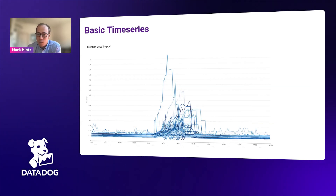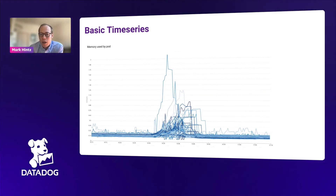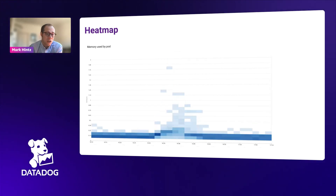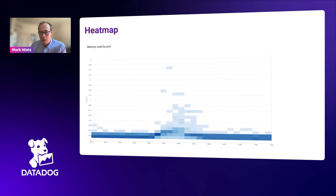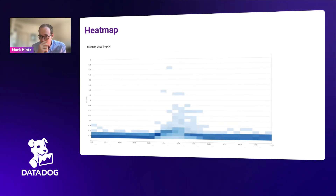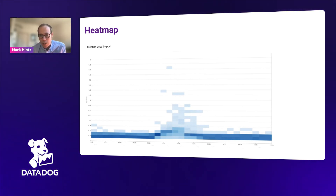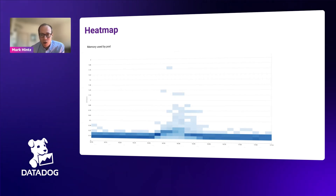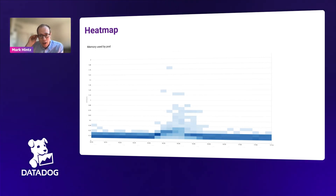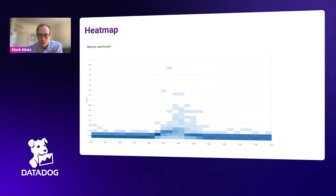Sometimes time series can get a little cluttered, especially with a very large number of lines or bars. For that we introduced the heat map, which tries to simplify this view. The heat map takes the same time series dataset but discretizes each line, quantizing them into bins and flattening all the lines into one view. Darker squares appear where more series cluster, and lighter squares where there are fewer — visually compressing the information into a more digestible view.